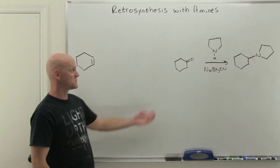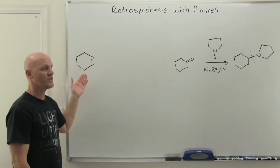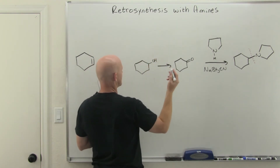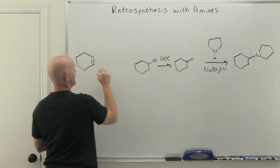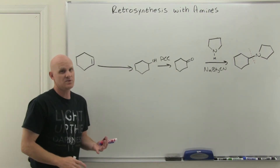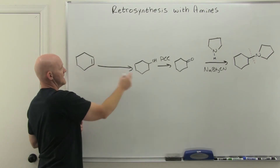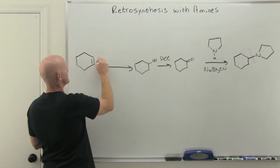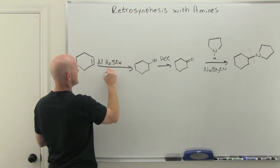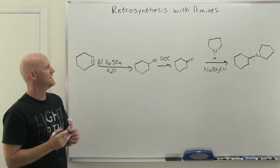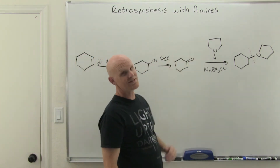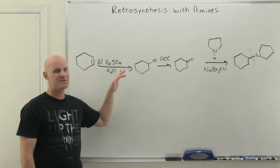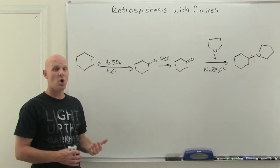That gives us the reductive amination step, so we just need to make the ketone. Making a ketone from an alkene: we can oxidize the corresponding alcohol using chromic acid or PCC. Then hydrate the alkene — Markovnikov or anti-Markovnikov doesn't matter since both sides are equally substituted. You can use acid-catalyzed hydration, oxymercuration-demercuration, or hydroboration-oxidation. I'll use dilute H2SO4. That's a three-step synthesis, and reductive amination is really the only viable route here.